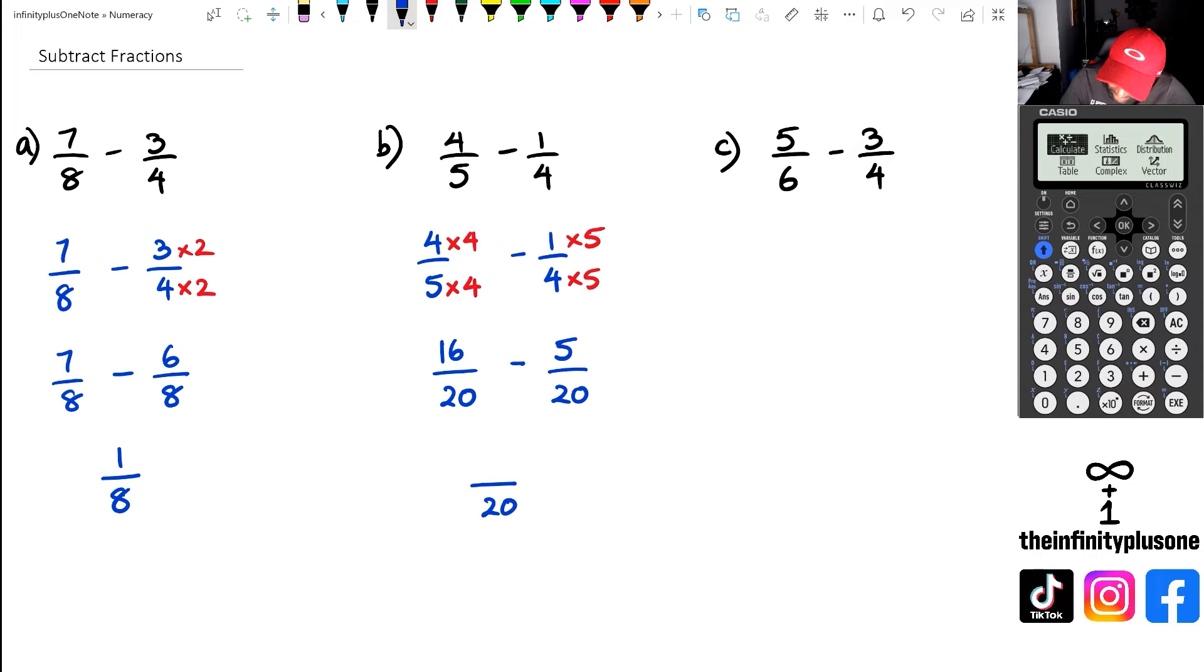So 20 is the common denominator. And then I've got 16 take away 5, which happens to be 11.